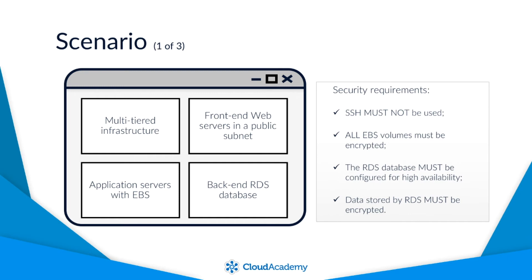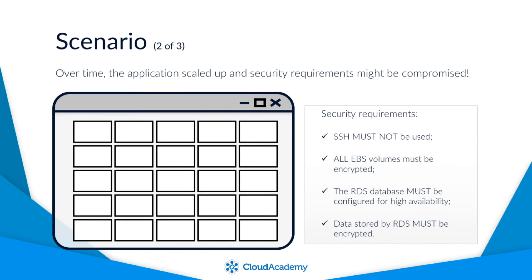So why the need for these config rules? Well, once the initial deployment was carried out and the security checks were carried out manually, the environment was then handed over to support and operations to maintain and look after. Over time, the application scaled up, additional resources were added, and there may have been some ad hoc incidents and general maintenance of the environment. The support and operations team, although they were made aware of the security requirements, may not have adhered to them at all times, perhaps due to human error, lack of knowledge, or laziness. Your environment now has a situation where some volumes are not encrypted and SSH has been activated on the web server security group, perhaps to troubleshoot an existing incident. Over time your environment changes and maintaining the same level of security implemented at the start of the project may not be continuous throughout its lifetime, which leads to mistakes and security holes within your infrastructure.